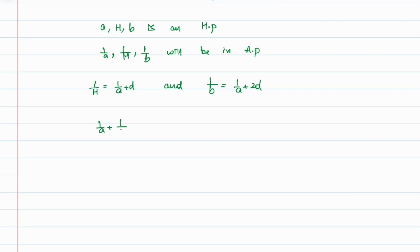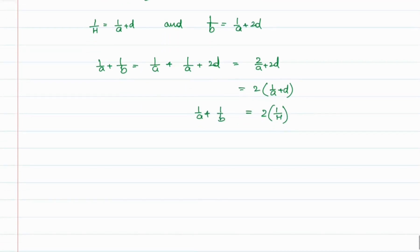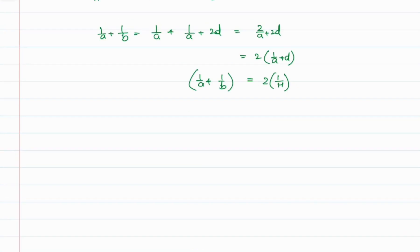Now if we find the sum 1/a + 1/b, we get 1/a + (1/a + 2d), which equals 2/a + 2d, which equals 2 times (1/a + d). We know that 1/a + d equals 1/H, so 2 times 1/H equals 1/a + 1/b.